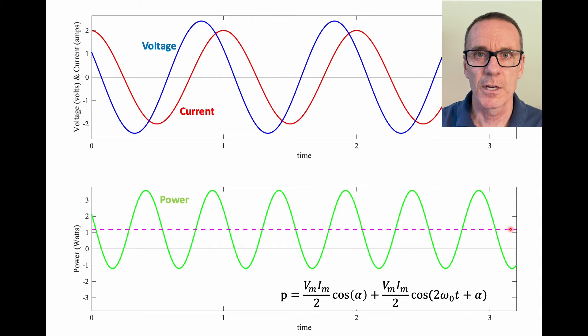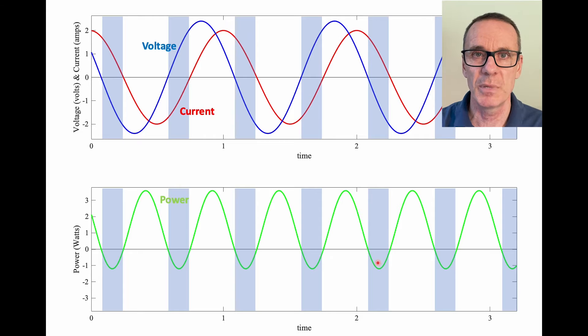But one thing you also notice when you look at the instantaneous power is that it goes negative. And that's an interesting thing that you cannot really ignore. So here I've highlighted the time periods when it's negative. And you can see that it corresponds to situations where the voltage and the current have opposite polarities. And when you think about it, that makes sense. The power is the multiplication of the two. So if one of them is positive and the other one's negative, then the power will be negative.